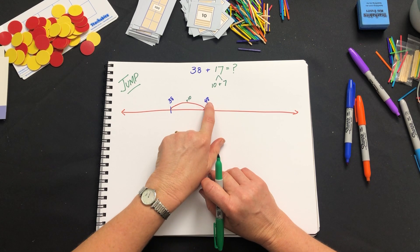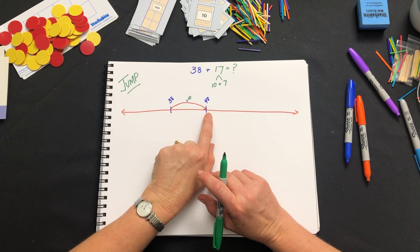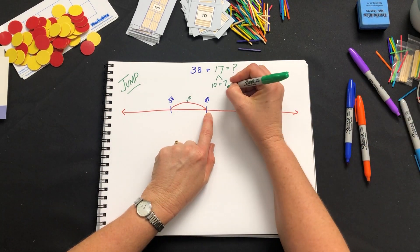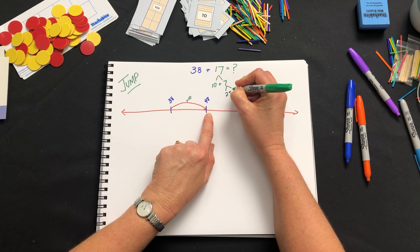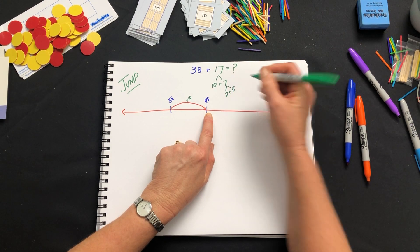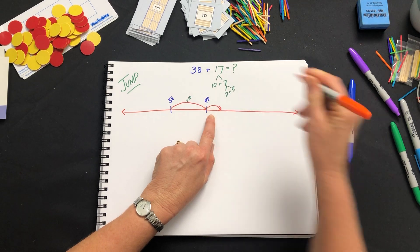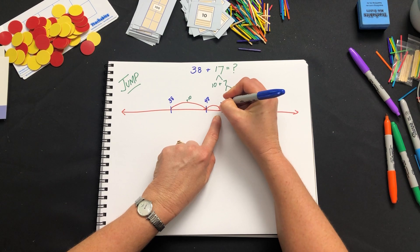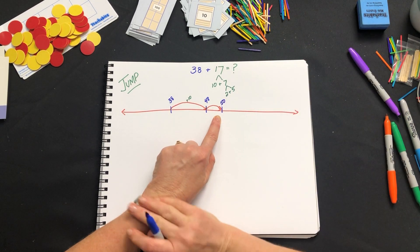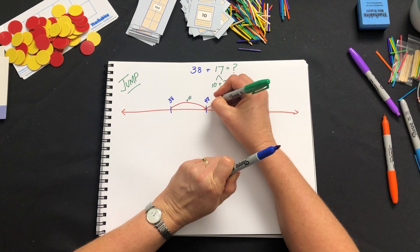I might know 8 plus 7 is 15 and be able to do that in my head but if I don't what I can do is partition 7 further into 2 plus 5. I jump 2 and the reason I did that was because it will get me to my nice 50, my other place value number that's easy to keep in my mind.